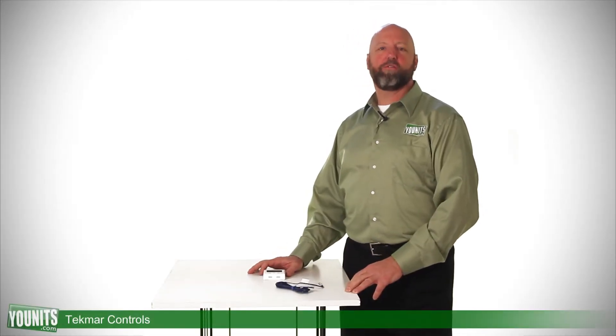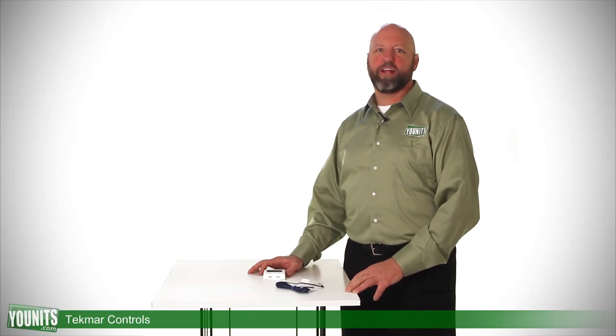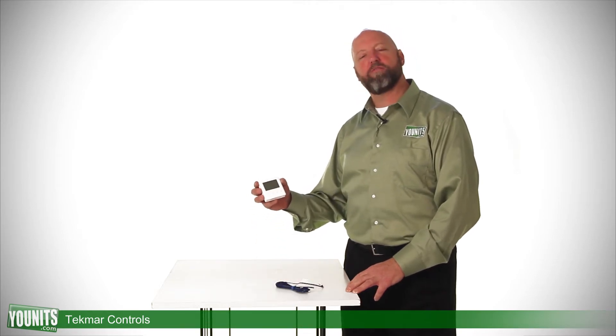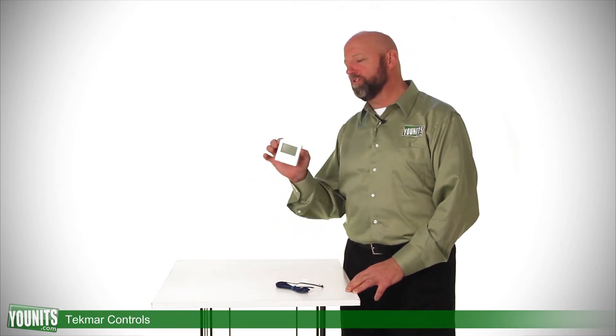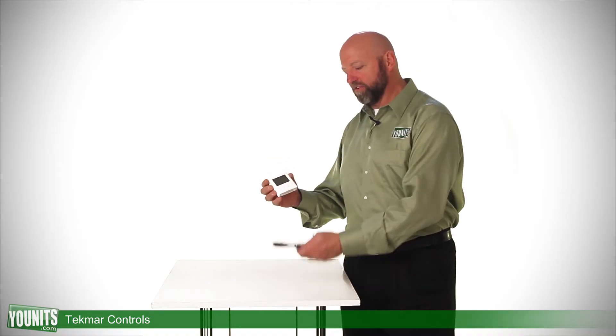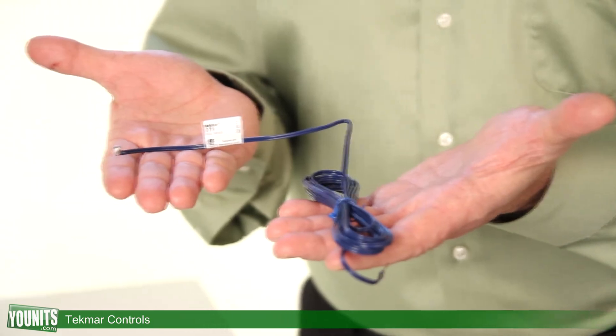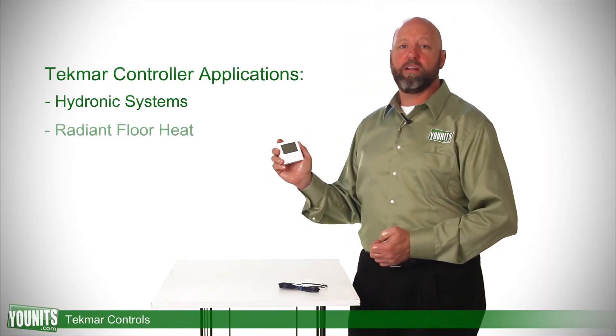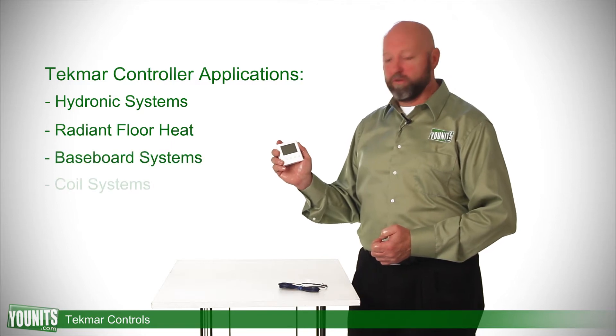Units.com offers a wide variety of thermostats to suit your needs. The item featured here is a Tecmar 509 kit, which includes a Tecmar 508 thermostat and an auxiliary coil. It is for hydronic systems, radiant floor heat, baseboard, or coil systems.